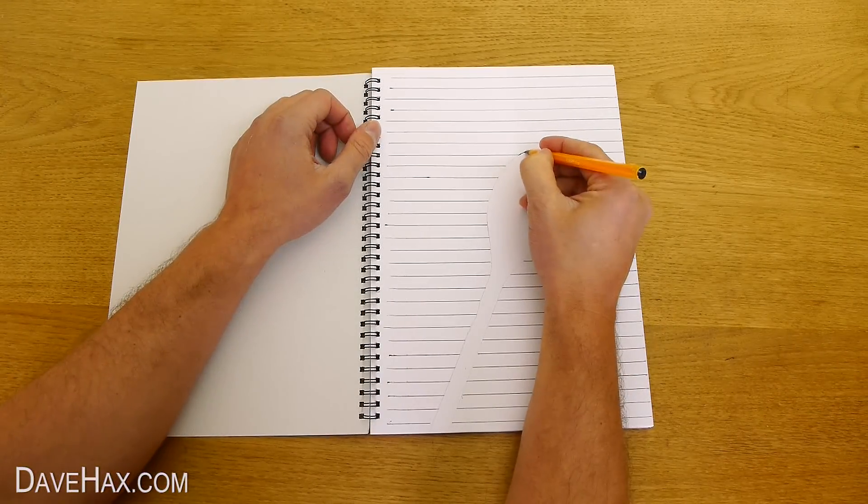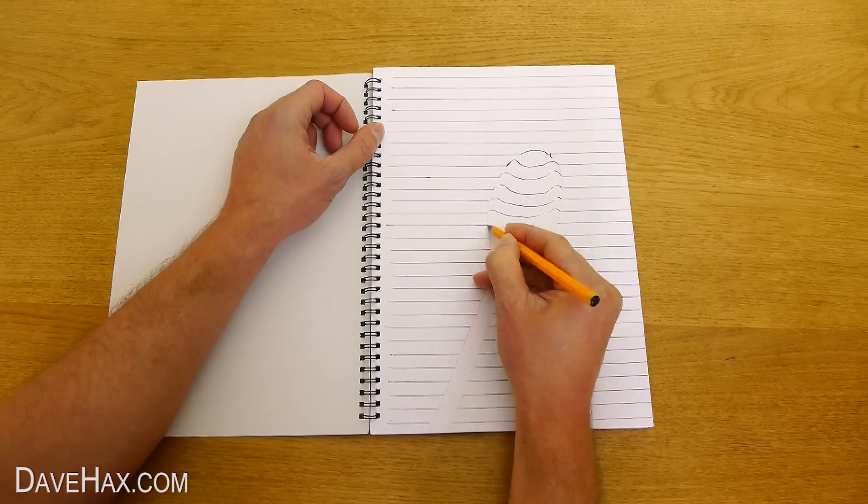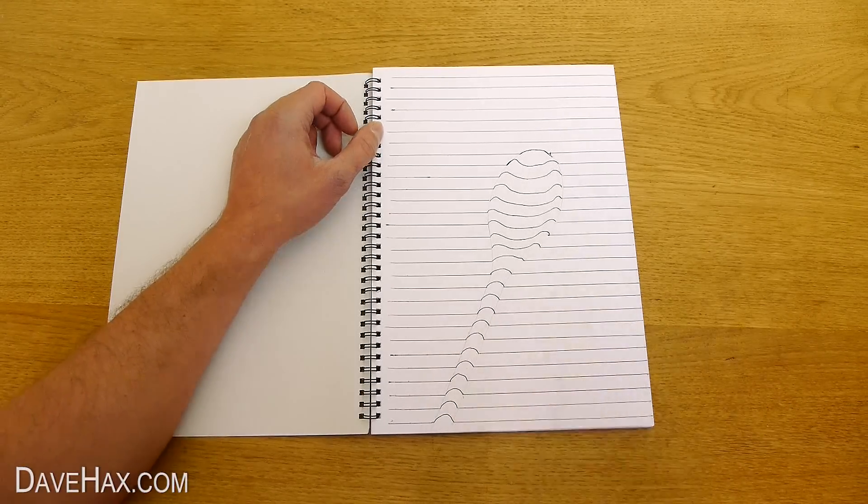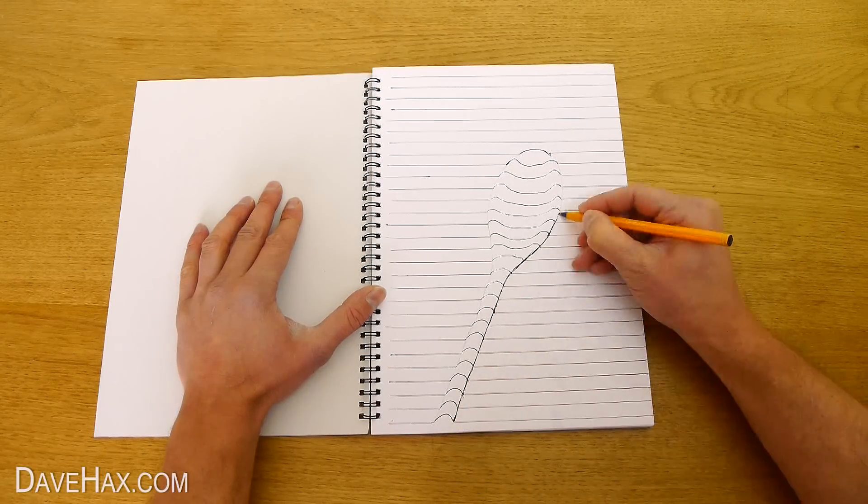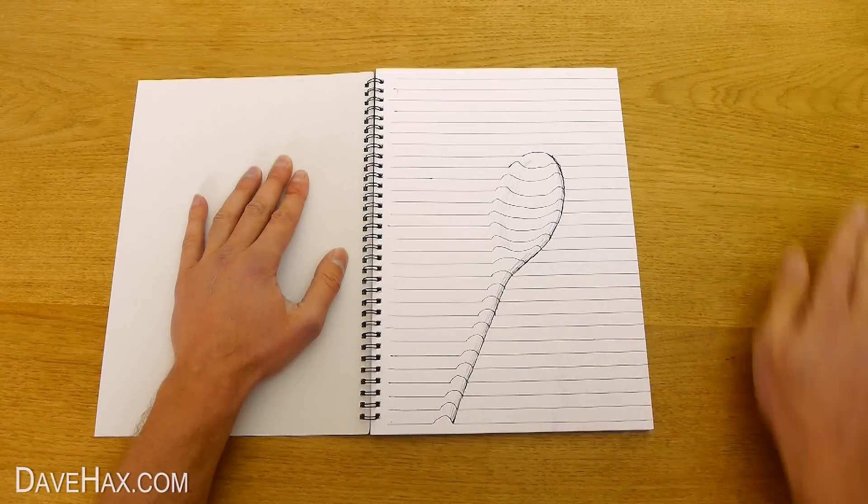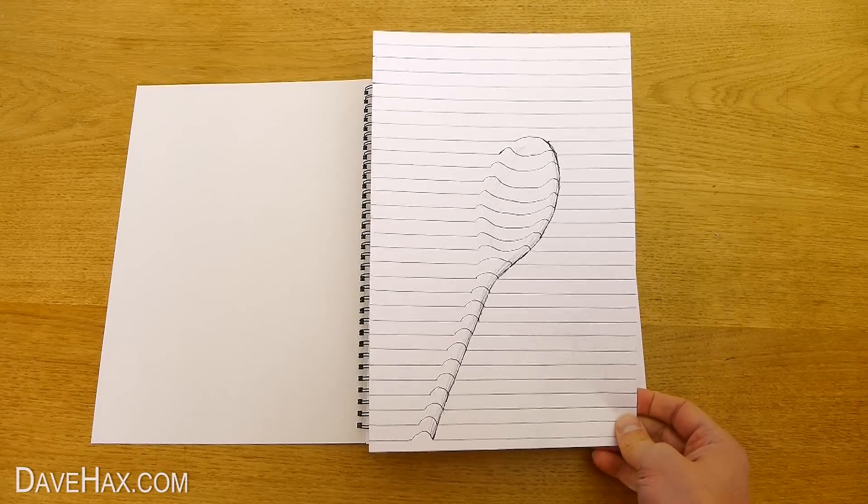Next we're going to use our pen to fill in the line and give our object a 3D effect. This should make it look like it's coming out of the page. When you're done you can add a little shading and rub out any pencil marks. Pretty cool, huh?